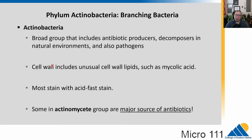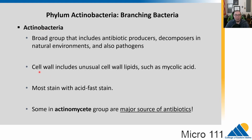Let's talk about the other phylum in the gram positives — the actinobacteria. Some of them are called branching bacteria because they make little filaments. The actinobacteria are a pretty broad group that includes some of our most important antibiotic producers, decomposers in the natural environment, and pathogens. A lot of these are soil microbes and people go out and sample different soils looking for them. Some species have cell walls with very strange cell wall lipids like mycolic acid, so many of them stain with the acid-fast stain rather than the gram stain.